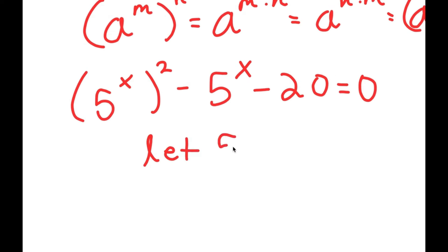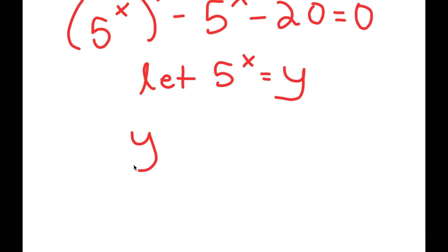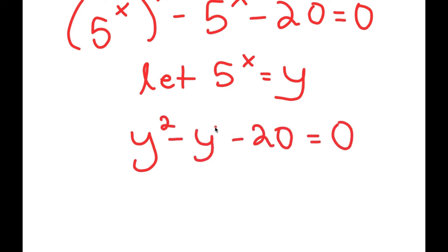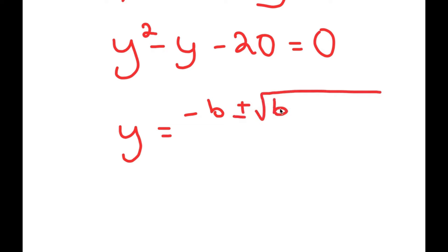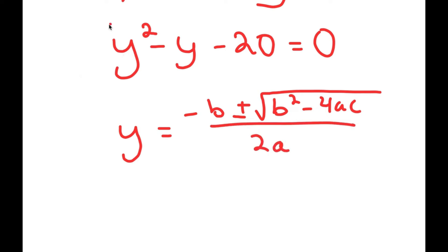Now I'm going to let 5 to the power of x equal y, so I get y squared minus y minus 20 equals 0. To solve this I'm going to use the quadratic formula: negative b plus or minus the square root of b squared minus 4ac, all over 2a. In this case, a is 1, b is negative 1, and c is negative 20.